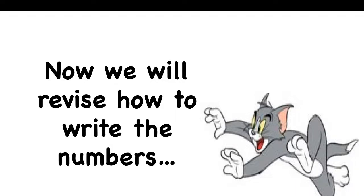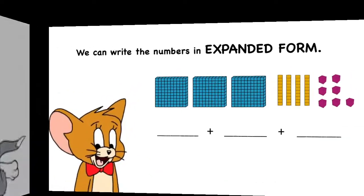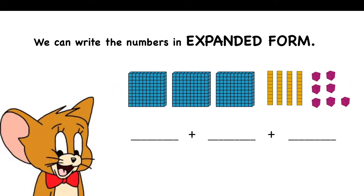Now we will revise how we write numbers. We can write numbers in the expanded form. Expanded form is when you add the hundreds and tens and ones separately — hundreds separately, tens separately, and ones separately. We write the expanded form as an addition sentence.